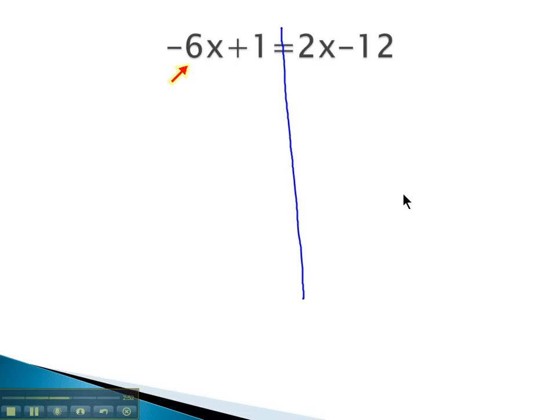Here, we have the negative 6x on the left and positive 2x on the right. The negative 6x is smaller. Negatives are always smaller than positives. So, let's get rid of that negative 6x.